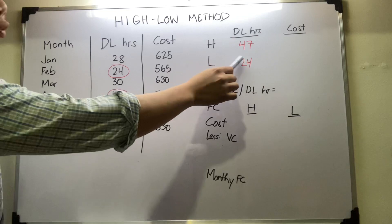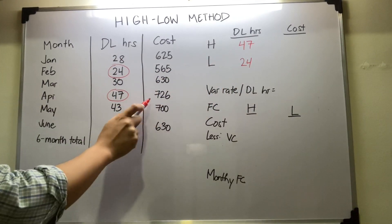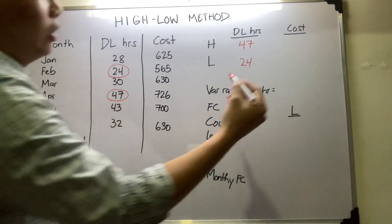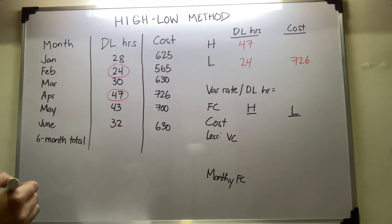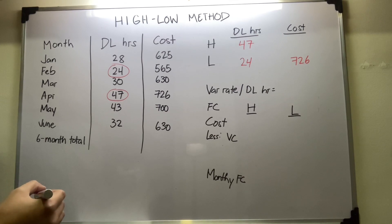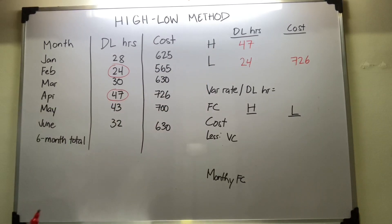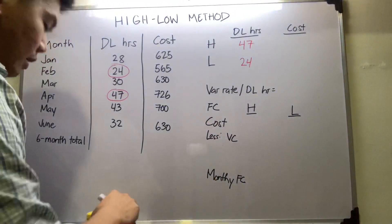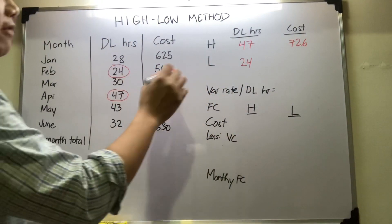Then put the corresponding costs for each activity level. The cost associated with the highest activity level of 47 is 726 pesos, while the cost associated with the lowest activity level of 24 is 565 pesos.